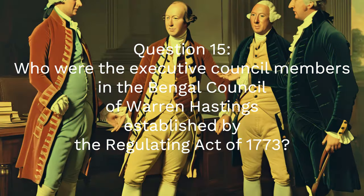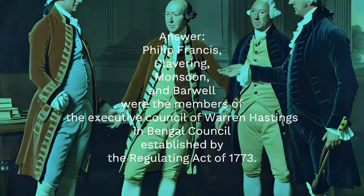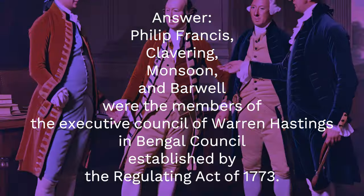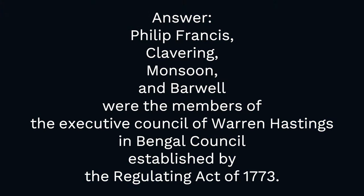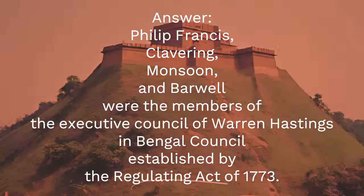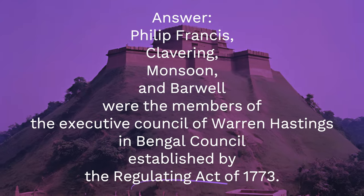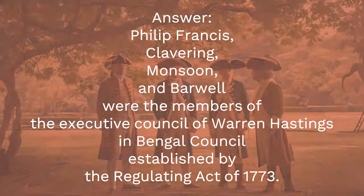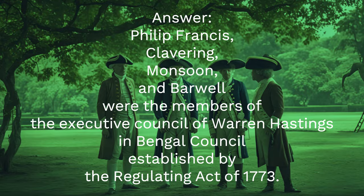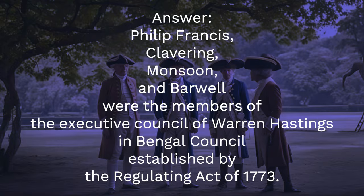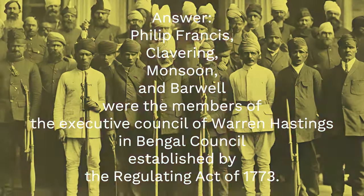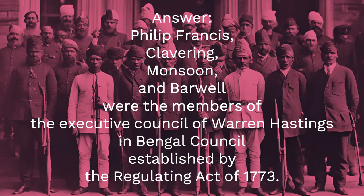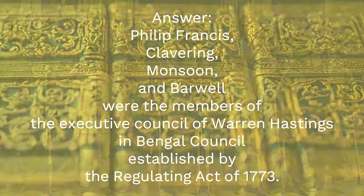Question 15: Who were the executive council members in the Bengal Council of Warren Hastings established by the Regulating Act of 1773? Answer: Philip Francis, Clavering, Monson and Barwell were the members of the executive council of Warren Hastings in the Bengal Council established by the Regulating Act of 1773.